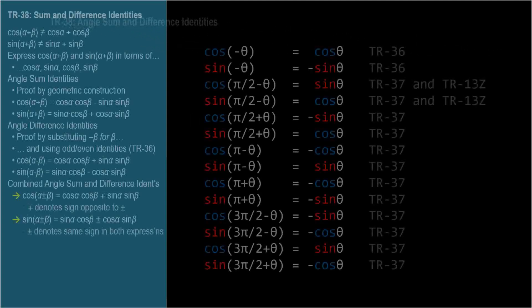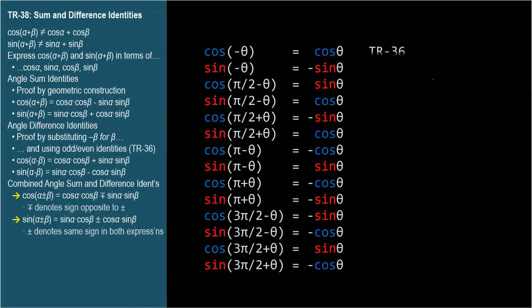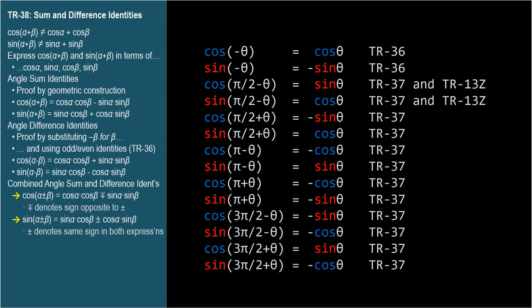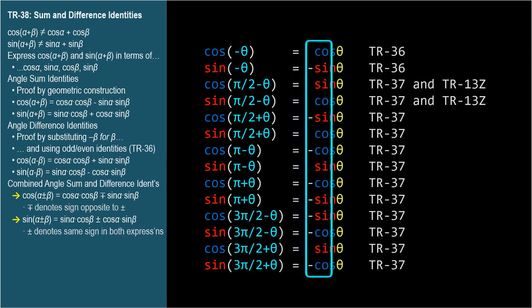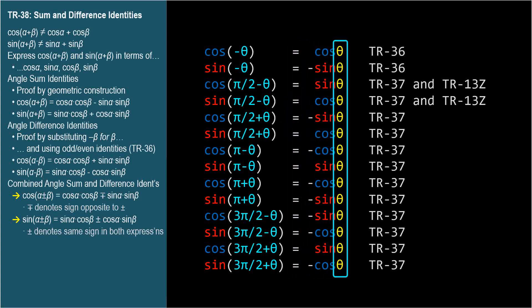In TR-36 and 37, we encountered trig function expressions whose argument was something other than a simple angle theta. In both cases, we figured out how to simplify and express the trig functions in terms of trig functions whose argument is simply theta.